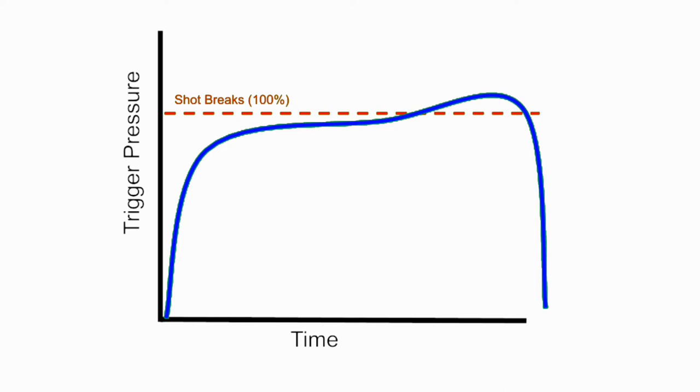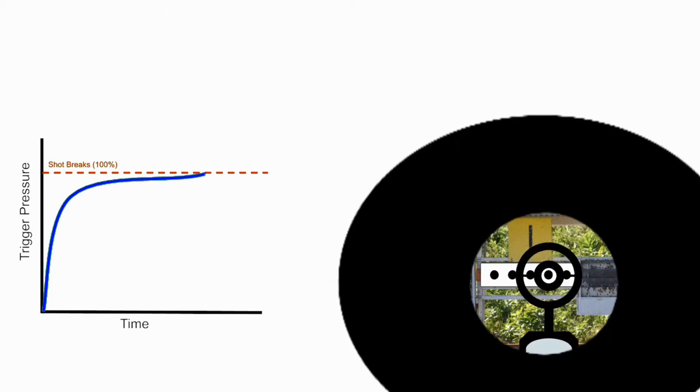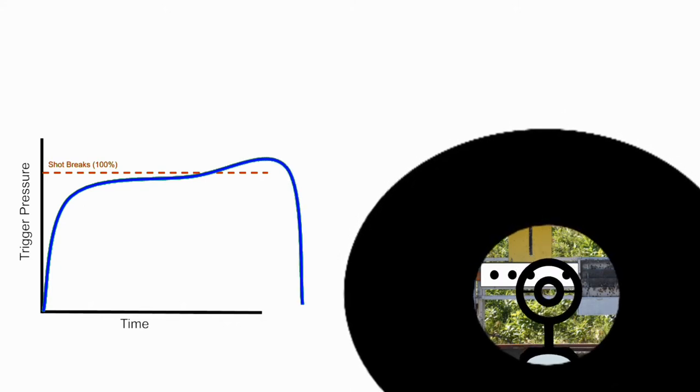Now obviously this demonstration worked pretty slow because I was explaining it as it was going through, so let's look again and see what it would look like in real time. So this athlete takes up the trigger right away, brings it right up to 90%, exhales onto the target, takes the shot, follows through and let's go. Alright, I know that was pretty quick so let's watch it one more time.